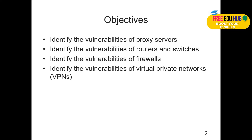The objective of this chapter is to identify the vulnerabilities of proxy servers — we'll see what proxy servers are — identify the vulnerabilities of routers and switches, and then firewalls and virtual private networks. This VPN is not the VPN we use to hide our identity; this VPN is to connect point-to-point services.